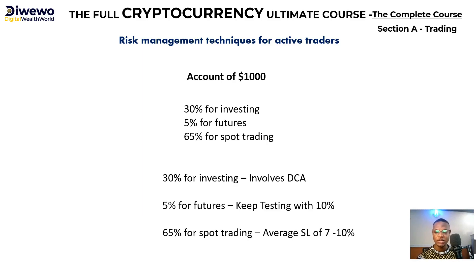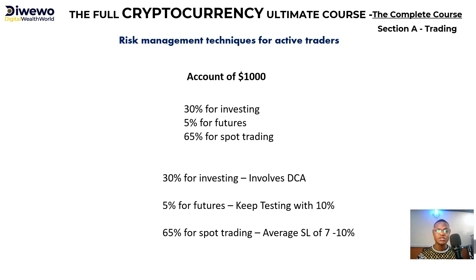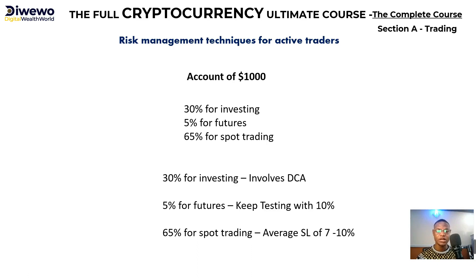Let me quickly show you how to manage your accounts using a one thousand dollar account as an example. If you have ten thousand dollars, just scale this arithmetic. Your portfolio should look like this: I use 30% for investing, 5% for futures, and 65% for spot trading. You can adjust, but this is what I teach and what has been profitable for me over time.